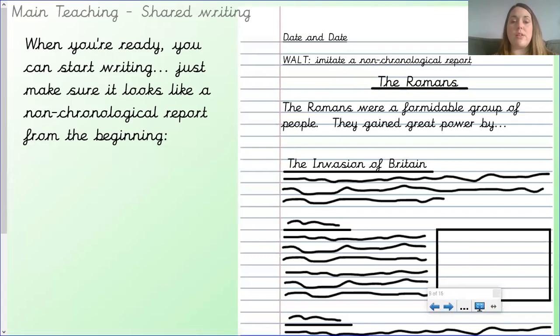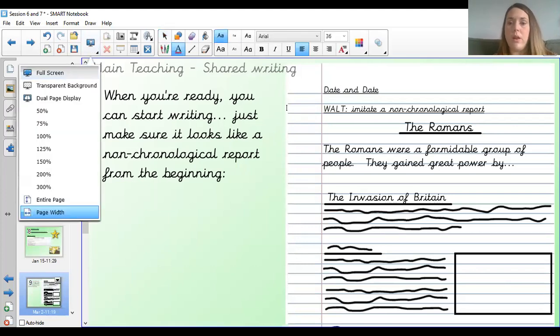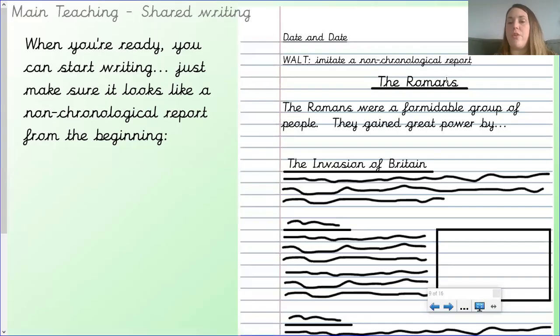Okay, when you're ready, you can start writing. Just make sure that it looks like a non-chronological report from the beginning. I've started mine over here, look. So, let me get my writing tool. I've got my big title, which is The Romans. I've written it in the middle at the top and I've underlined it. I've then started with The Romans were a formidable group of people. They gained great power by... So, that's the start of my introduction. I haven't finished it yet. I might work on that with you in a minute. And then my first subheading is The Invasion of Britain. I wonder, shall we try and finish my introduction?